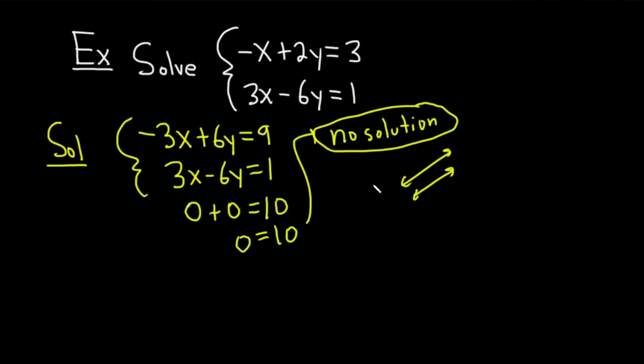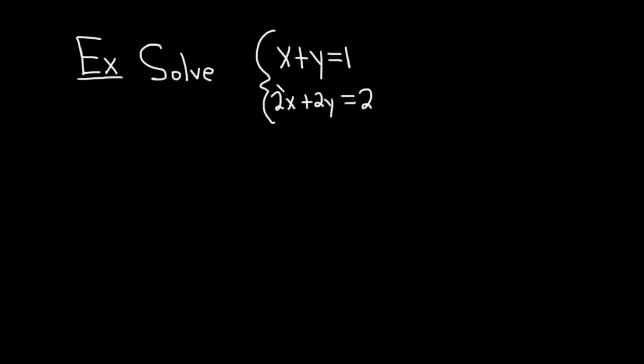Let's do another example. Solve system of equations with equations x plus y equals 1 and 2x plus 2y equals 2. Let's work through this one solution. So as before, we will use the elimination method. Let's go ahead and multiply this first equation by negative 2 so that we can add it to the second and get rid of stuff.